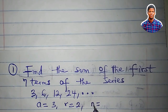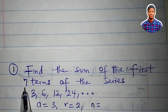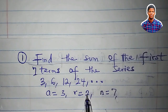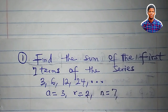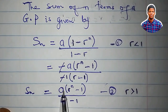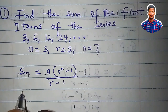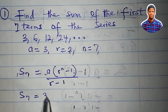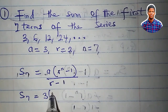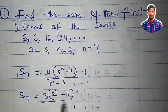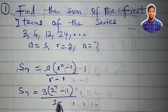Which formula do we use? r = 2, and 2 is greater than 1, so we use Formula 2: S_n = a(r^n - 1)/(r - 1). We are looking for S_7. a = 3, r = 2, n = 7. So S_7 = 3(2^7 - 1) / (2 - 1).